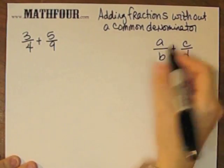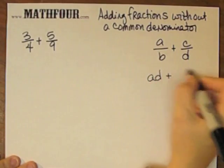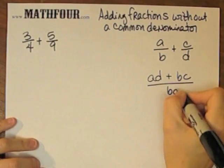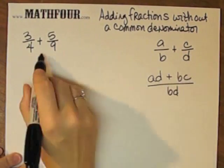So I'm going to do A times D plus B times C over B times D. So this is how I'm going to add my fraction.